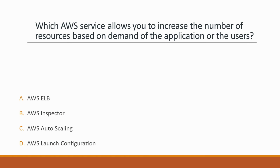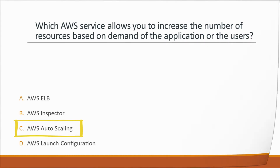Next question: Which AWS service allows you to increase the number of resources based on demand of the application or users? Options: A. AWS ELB, B. AWS Inspector, C. AWS Auto Scaling, D. AWS Launch Configuration. Correct answer is option C, AWS Auto Scaling, because it monitors your applications and automatically adjusts capacity to maintain steady, predictable performance at the lowest possible cost, making recommendations to optimize performance, costs, or balance between them.